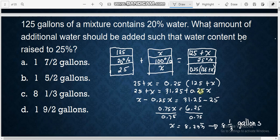So we have 125 gallons of mixture contain 20% water. What amount of additional water should be added? We have 8 and one-third gallon should be added to the mixture of 125 gallons with 20% water to obtain a raise of 25% water. So that is the answer for this, the solution and the answer.